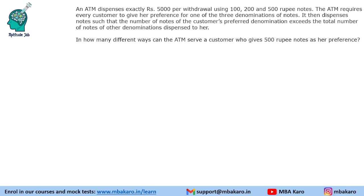Hello everyone, welcome to UptitudeJab. This set from CAT 2018 slot 1 DILR says that an ATM dispenses exactly ₹5000 per withdrawal using 100, 200 and 500 rupee notes. The ATM requires every customer to give a preference for one of the three denominations. It then dispenses notes such that the number of notes of the customer's preferred denomination exceeds the total number of notes of other denominations dispensed to her.